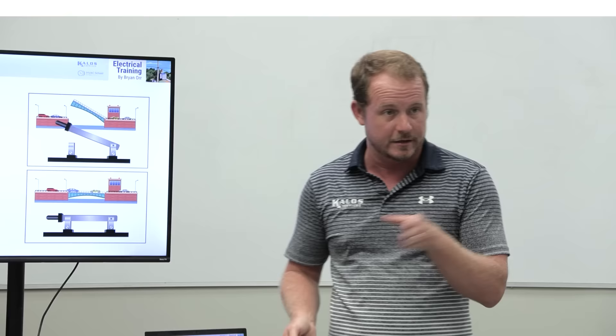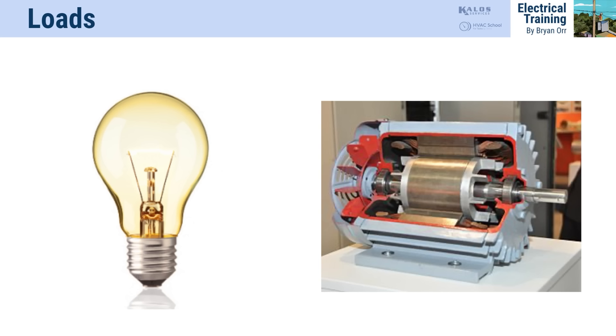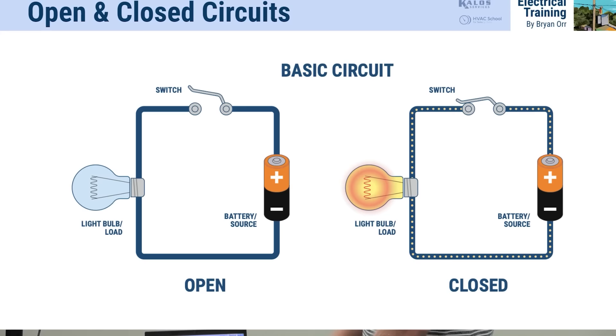And we have loads. Quick quiz: this light bulb—what type of load is it? A resistive load, because it creates light or heat. This other component—what do we call it? An inductive load, because it's an electromagnet creating electromagnetism and using it to drive something.